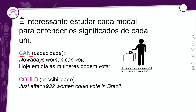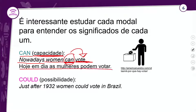O 'can' — lembre do marido da Barbie, o Ken, só que com C e A-N. O 'can' fala de capacidade: geralmente significa poder ou ser capaz de fazer algo. Ele também é usado para falar sobre habilidade. Exemplo: 'Nowadays, women can vote' — hoje em dia, as mulheres podem votar. 'I can swim' significa eu consigo nadar — tenho essa habilidade. 'I can sing' — eu consigo cantar.